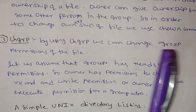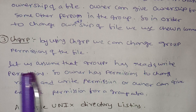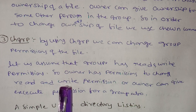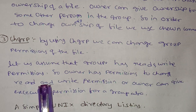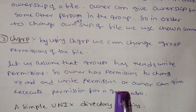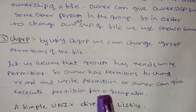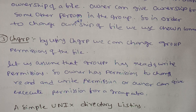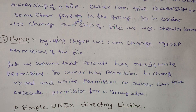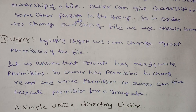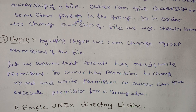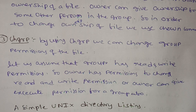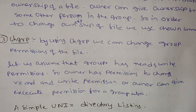We can change the group permission of the file using chgrp. For example, if a group has read and write operations, the owner has permission to change those or give execute permissions to the group. The chgrp command is related to group permissions.